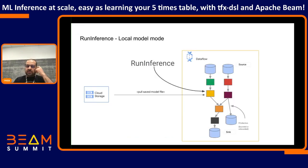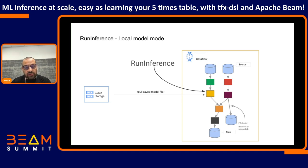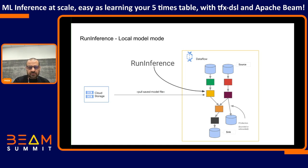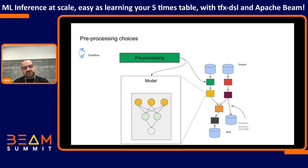Run inference is a transform we can plug in like any other transform within our directed acyclic graph of computation built using Apache Beam. In local mode, it needs to pull a model file from a location universally accessible to all workers. For the demo, we use Google Cloud Storage to store the model. When the Beam pipeline spins up, it pulls that model down and gets everything ready for processing elements, whether that's in batch or stream mode.